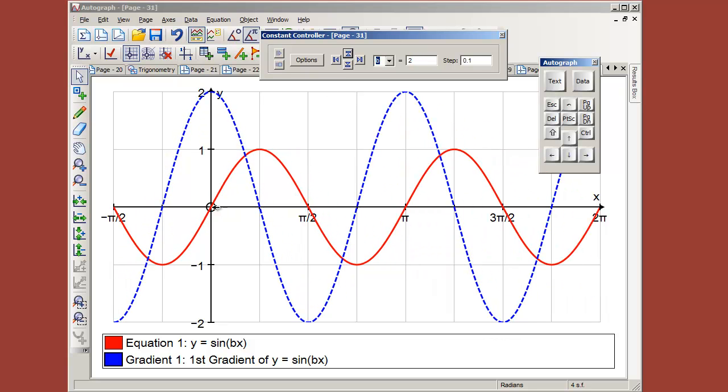there we have it's now completing a complete cycle in pi radians and the first derivative also completes it so it's on the same frequency but it's double the value, which is quite a nice way of showing that the differential of sine of bx is b times the cosine of bx.